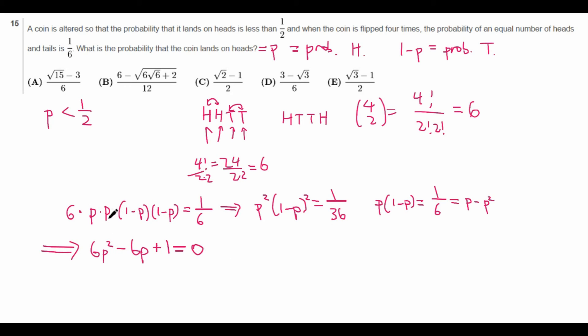And let's finish this solution. So we get, after reordering, 6P squared minus 6P plus 1 equals 0. And then that implies that, by using the quadratic formula, that P is equal to 6 plus or minus square root of 6 squared minus 4 times 6 times 1 all over 2 times 6, which is 12. This equals 6 plus or minus the square root of 36 minus 24 is 12 over 12.